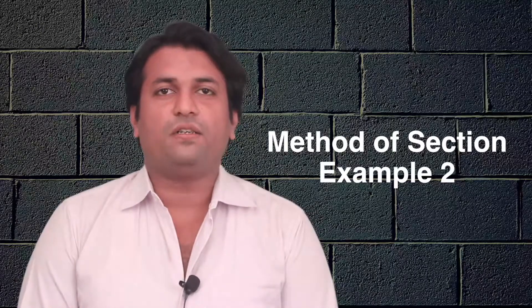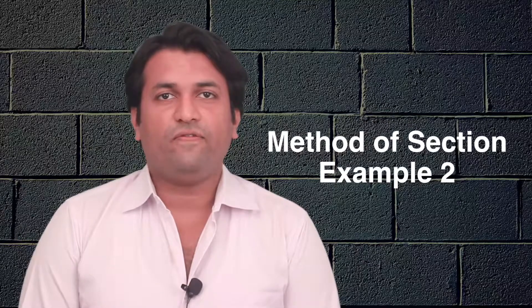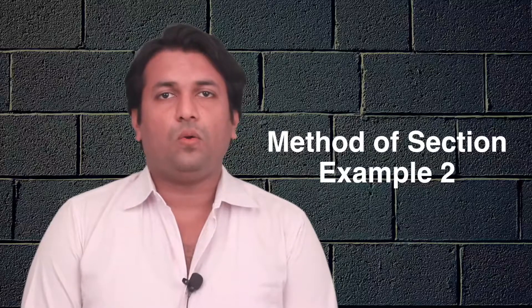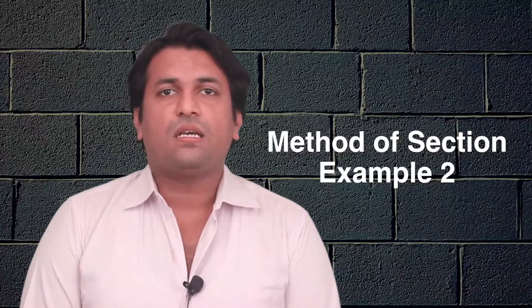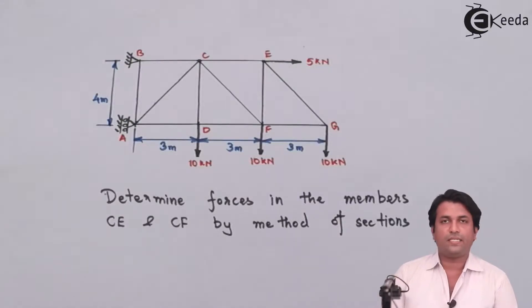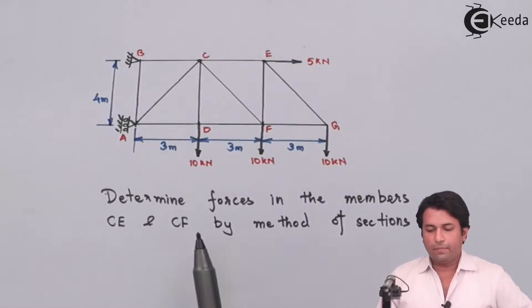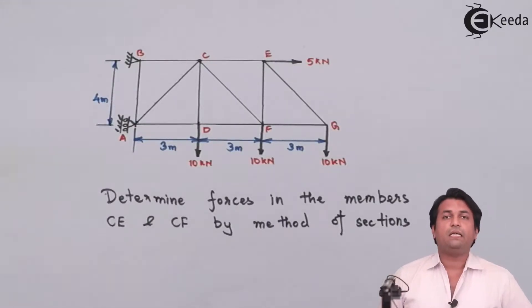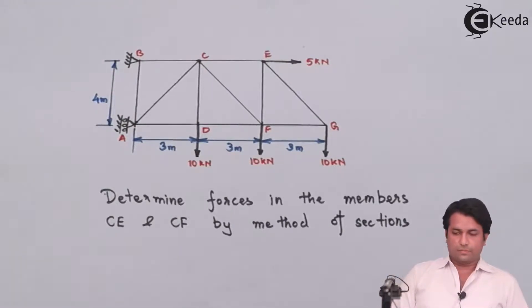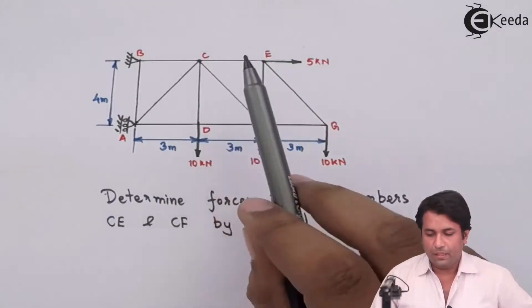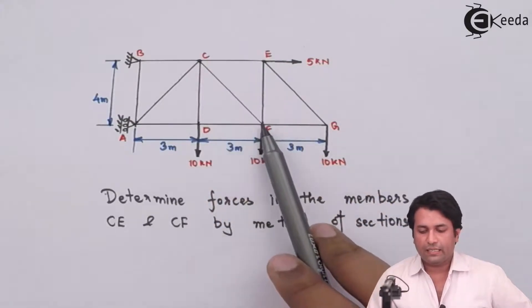Hello students, in this video lecture we are going to see Method of Sections Example Number 2. In the previous example we have seen how to solve a truss and find out forces in a few selected members. Now in this example, we are to determine forces in members CE and CF by the method of sections.